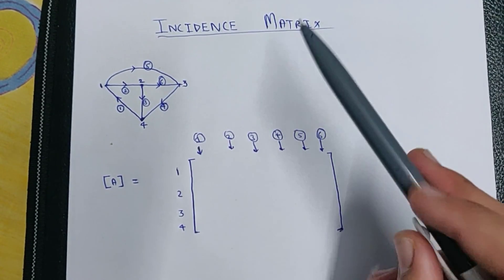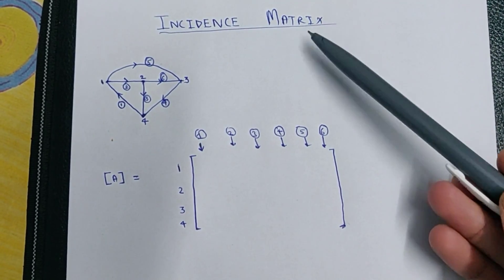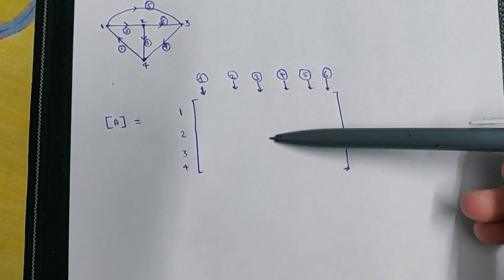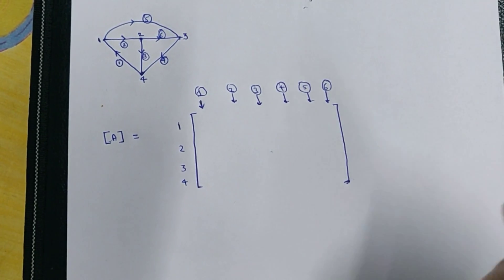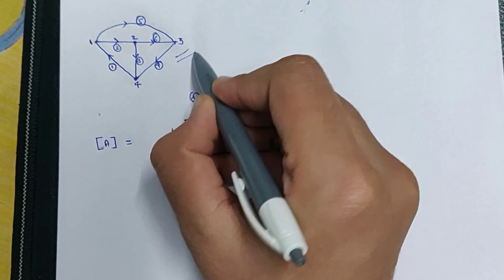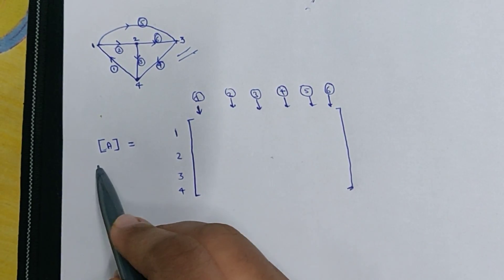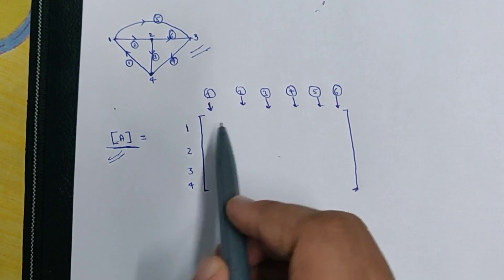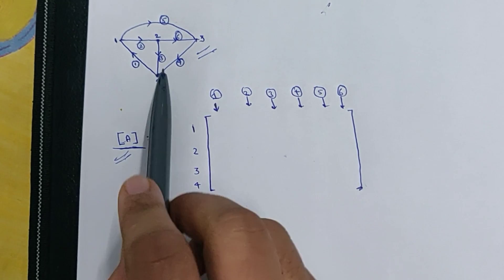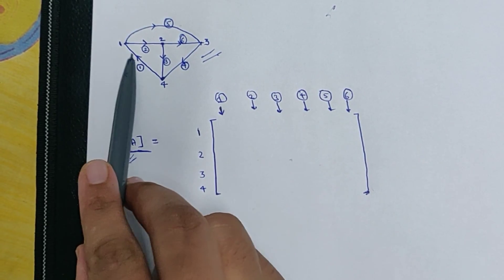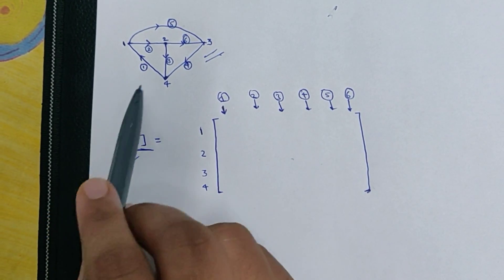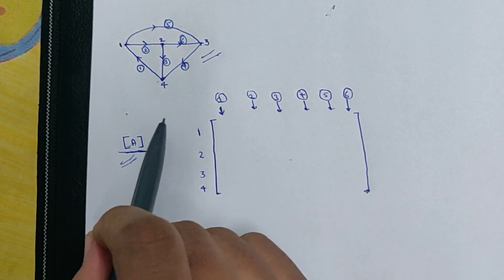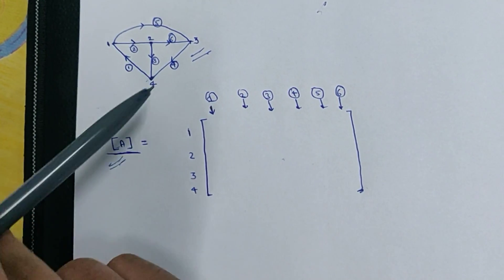Hello guys, today in this video I will tell you what is incidence matrix. We will learn how to draw an incidence matrix. Suppose we are given this directed graph — we have to write its incidence matrix. Incidence matrix is denoted by A. It is a matrix which tells us the direction of the current flowing from various node points.